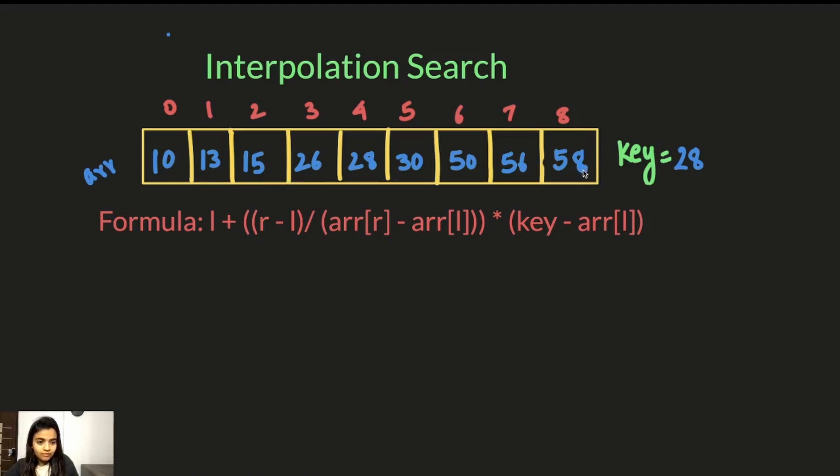And these are the indices and these are the elements arranged in sorted order. And if you observe closely, the interval between the elements are almost equal, not equal, but almost.